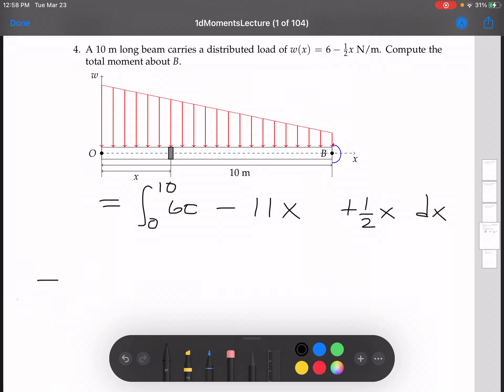Taking the antiderivative, we've got 60X minus 11 over 2 X squared plus 1 half times X cubed over 3, evaluated from 0 to 10. We can take this 1 half times 1 third, turn it into a 1 sixth.